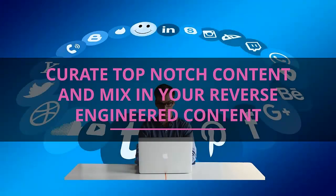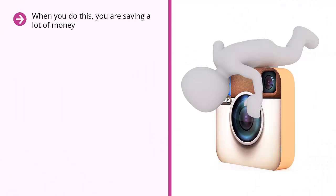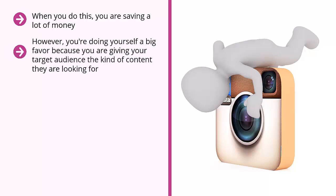Curate top-notch content and mix in your reverse-engineered content. Now that you have a clear idea of the themes of your competitors' most successful content, look for third-party content that non-competitors or lower-level competitors produce that meet these themes. When you do this, you're saving a lot of money — you don't have to create this content, you're just sharing it. You're giving your target audience the kind of content they are looking for, content you know they already like based on your research. When you feature this content, you tend to attract the same types of audience as your competitors.